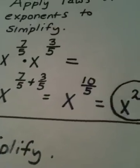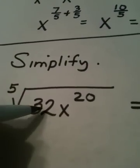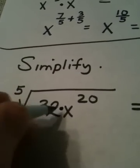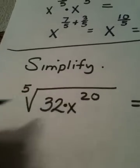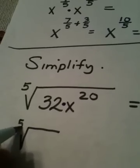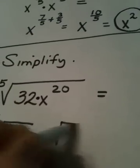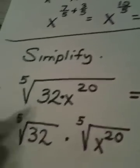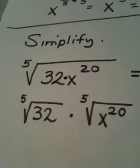And the final problem on this video. If I'm taking the fifth root of 32x to the 20th, what's really happening here? When I have a product under a radical, I can break this up by using the product rule of radicals. I can write this as the fifth root of 32 multiplied by the fifth root of x to the 20th. You can pull a radical apart when it's multiplication or division. That's called either the product rule or the quotient rule.